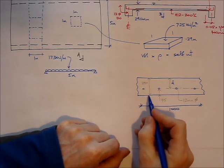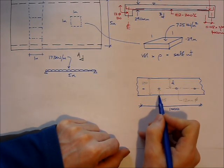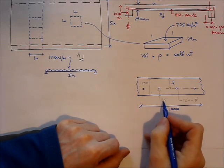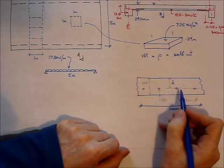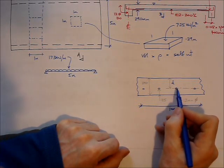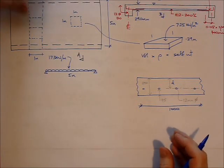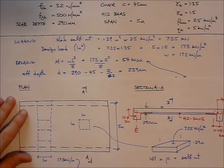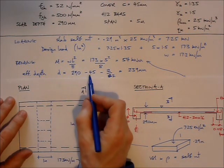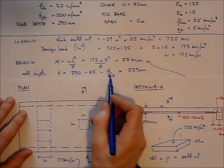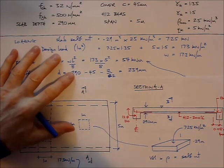The overall depth is 290mm. The depth to the face of the bar from the face of the concrete, which is the cover, is 45mm. And as the diameter of the bar is 12mm diameter, then the distance from the face of the bar to the center of the bar is this divided by 2. So the effective depth is 290mm minus 45mm cover minus the bar diameter divided by 2, which equals 239mm.